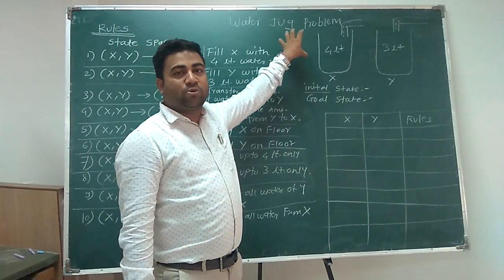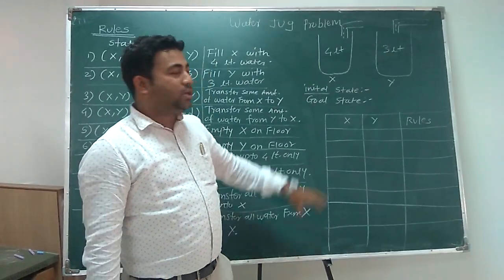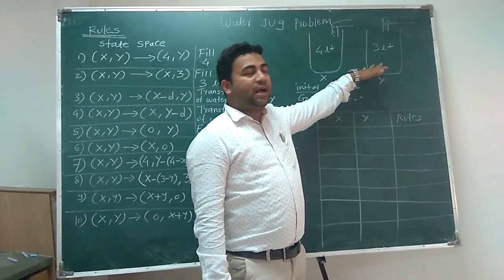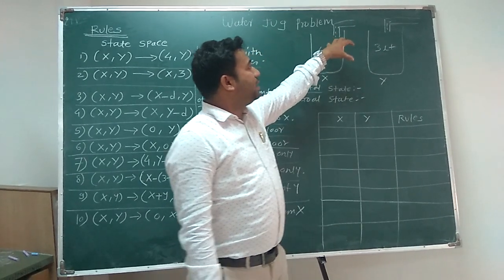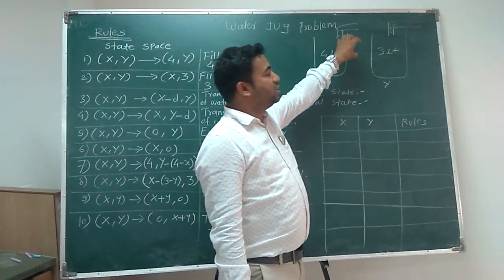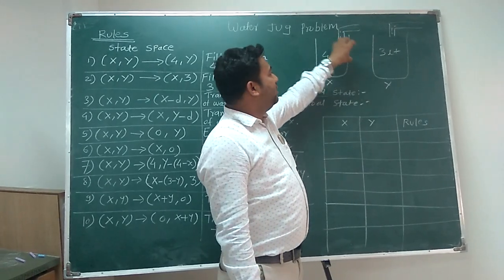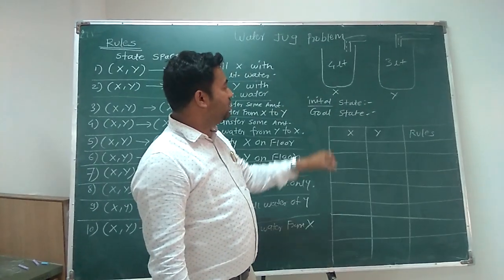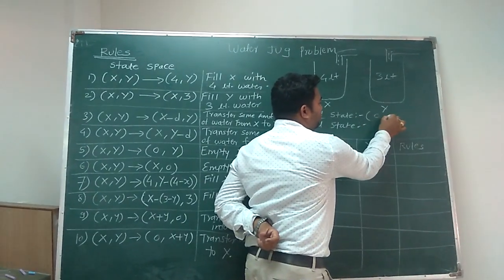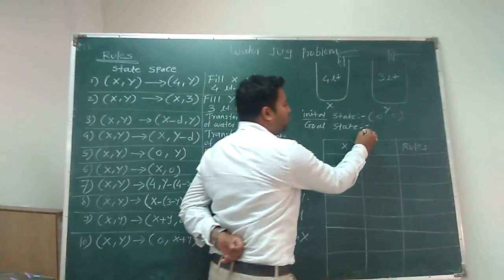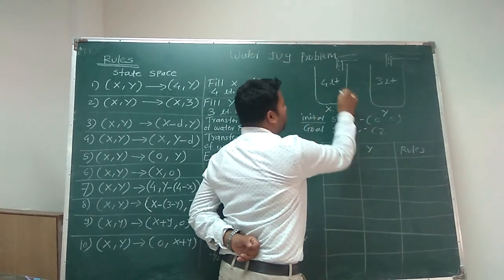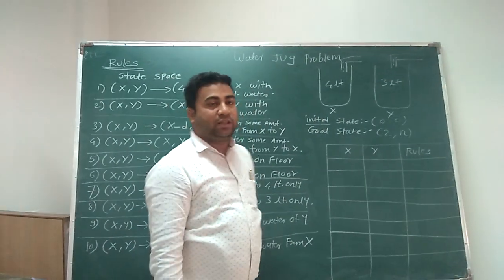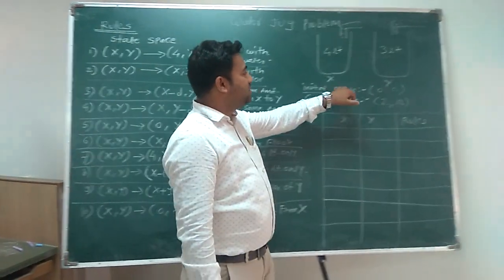Let us see what we do with the water jug problem. In the water jug problem, there are two jugs given — one is the 4-litre jug, and another is the 3-litre jug. There is one pump which can supply water. We do not have any limitation for the water; we can fill any amount. The initial state is (0, 0).